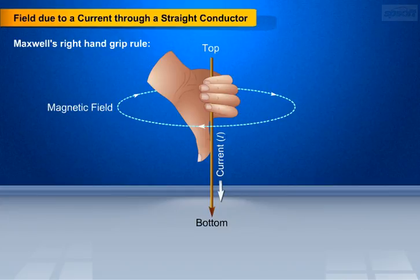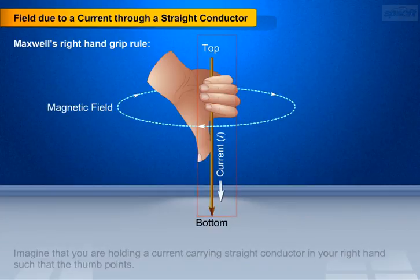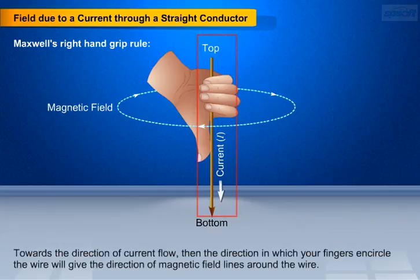If we look at the image first, imagine that you are holding a current carrying straight conductor in your right hand, such that the thumb points towards the direction of current flow. Then the direction in which your fingers encircle the wire will give the direction of magnetic field lines around the wire.